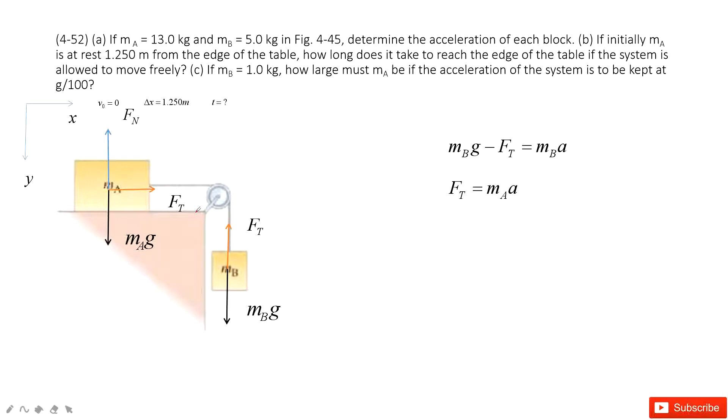And there, A and B are in the same system, so the acceleration is the same. Therefore, we can solve for the acceleration. You can see we can input the FT inside. And then solve it. We find the acceleration is just mB·g divided by the mass mA plus mB.